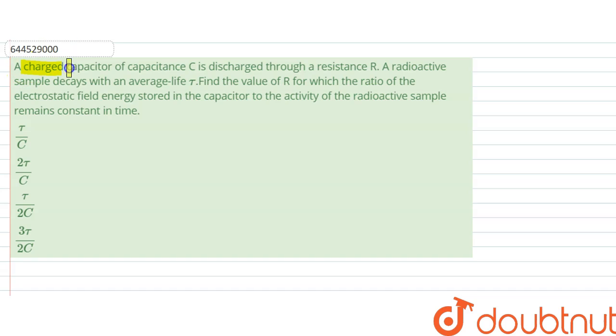The question says a charged capacitor of capacitance C is discharged through a resistance R. A radioactive sample decays with the average life of time τ.